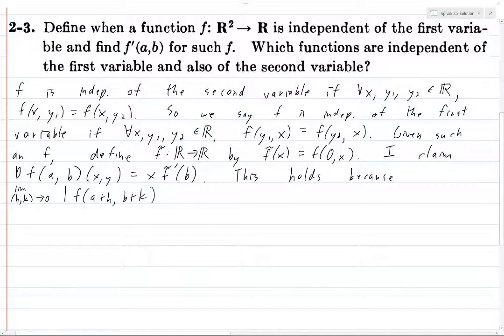B plus k minus f of AB minus dF of AB at x, y, and we divide by the norm of H, and now what we do is this is going to be less than or equal to the limit as h and k go to 0 of, so now the top